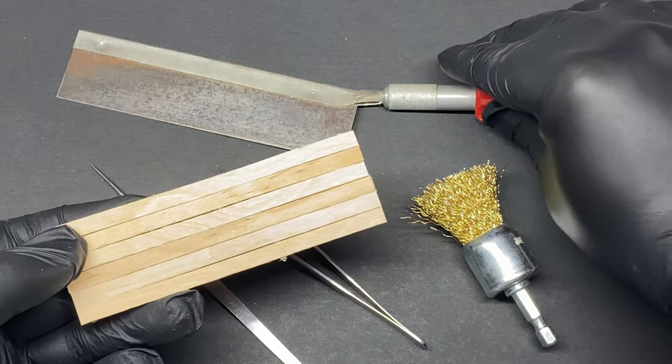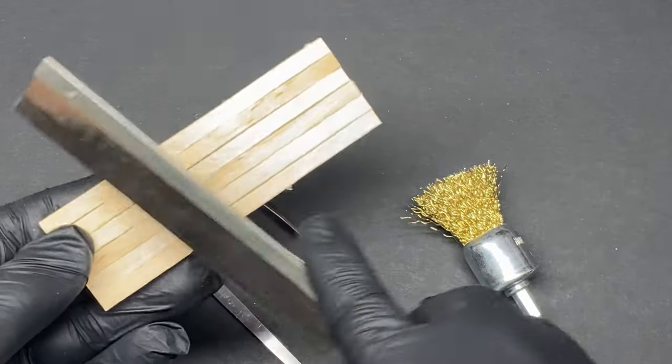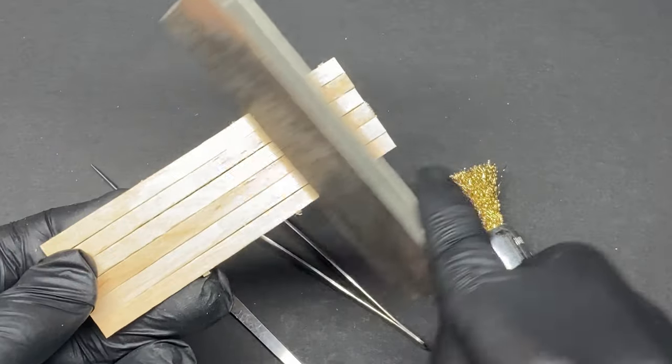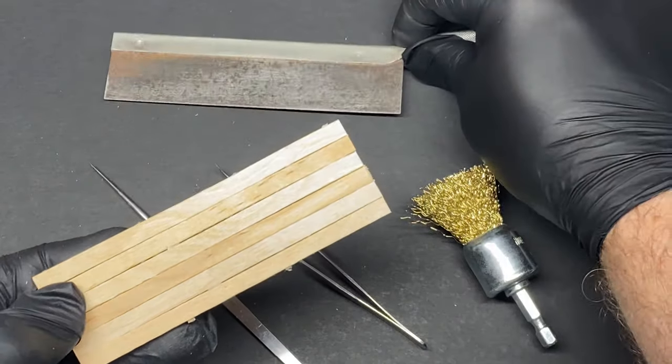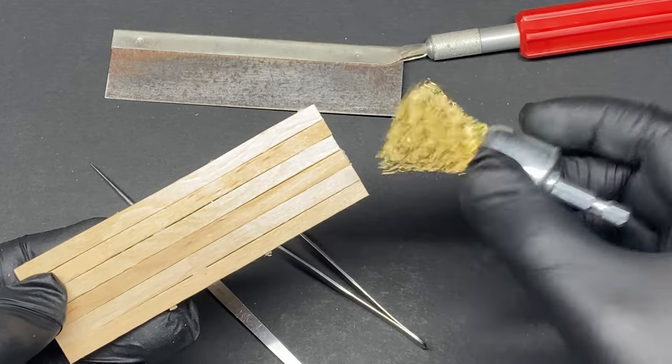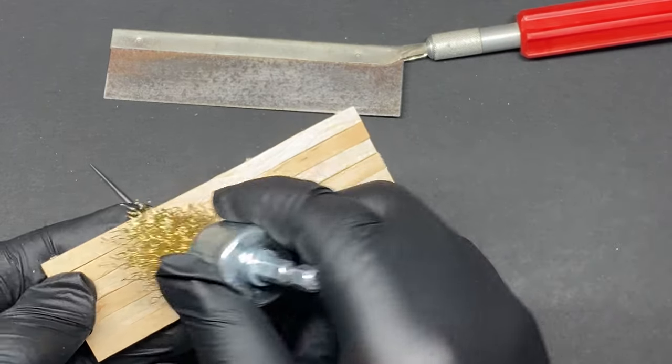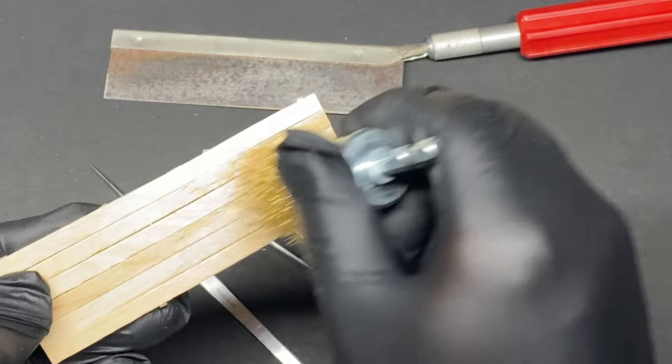Your weapons of choice for adding age and grain to the timber are up to you, but here's some of the tools that I work with. A razor saw is always handy to drag along the timber just to start breaking the smooth surface. A wire brush is a little bit more aggressive and can cut more randomly into the timber.